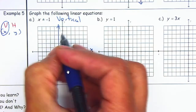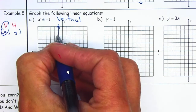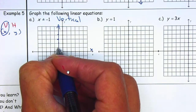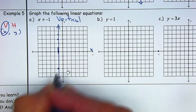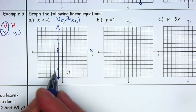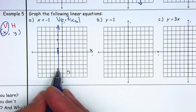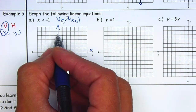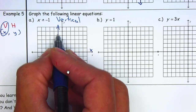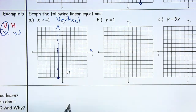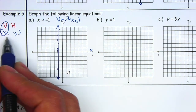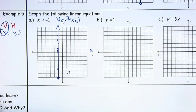Remember, the reason it's vertical is because any point on this line — any of those points — that x-value will be negative 1. So this point will be (negative 1, negative 4), this point will be (negative 1, 3). All of those values, that x-value is negative 1. But you can just think of Van Helsing to remember.